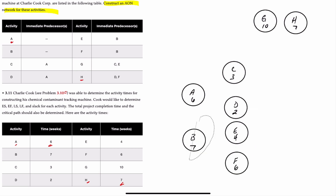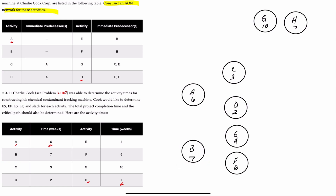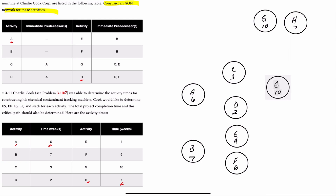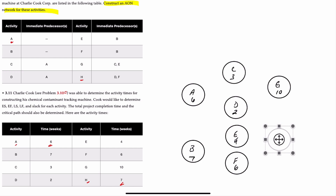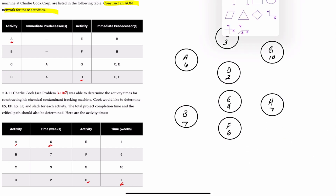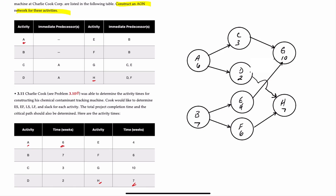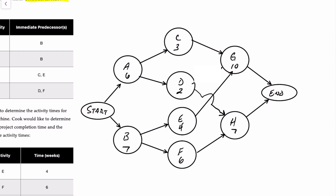We can move B down a little to center it between E and F. G is preceded by activities C and E, so we'll put activity G here. H is preceded by D and F, so we'll place that accordingly. Now we can join everything with arrows. We also don't have a single start or end node, so we'll insert a couple of ovals. And there we have our completed network diagram.